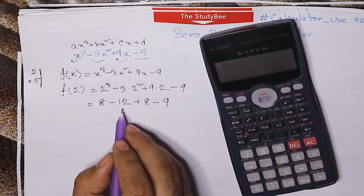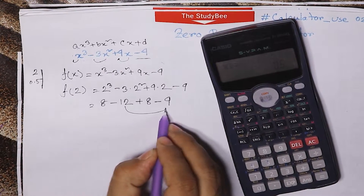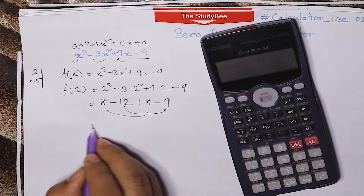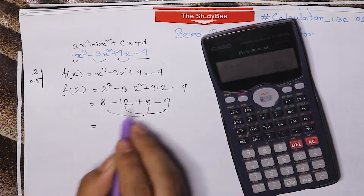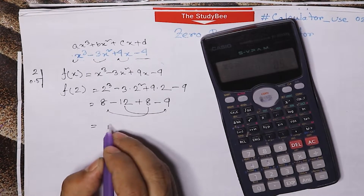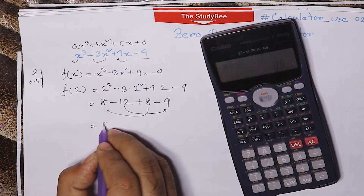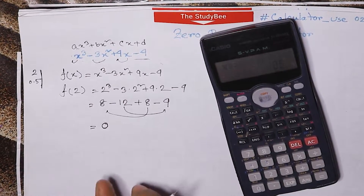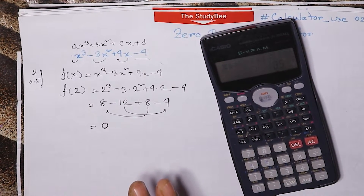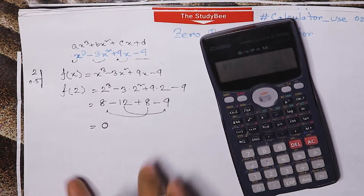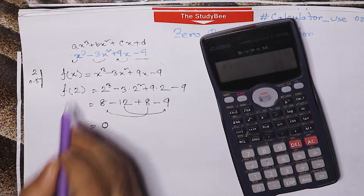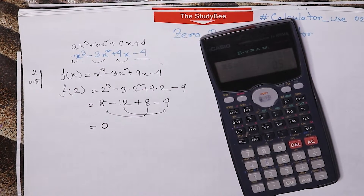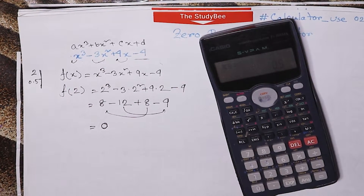So we have to know this one and this one is known to be equal to 0. So we have to know that the value of x minus 2 is equal to 0. So if we have the value to 0.